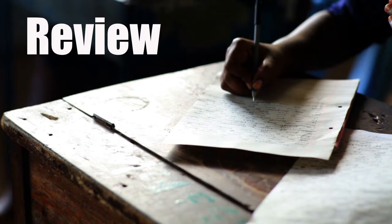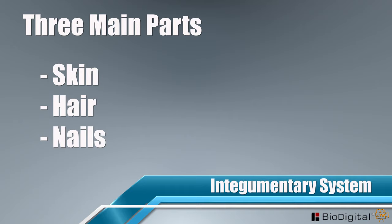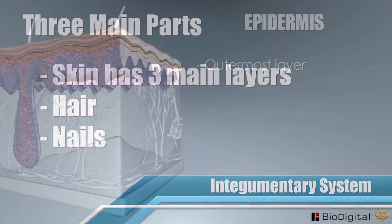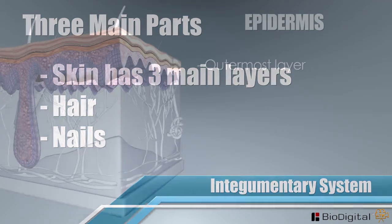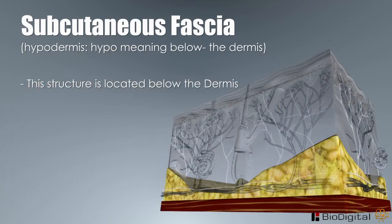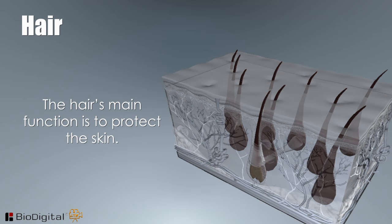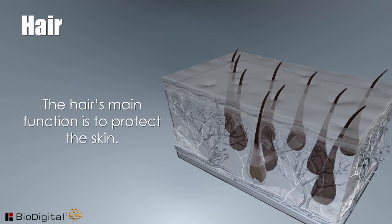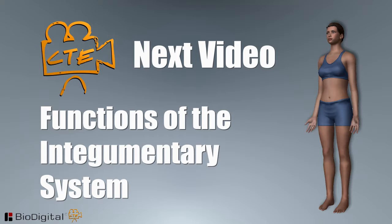Before we conclude part one of the integumentary system, let's review. There are three main parts to this body system: the skin, the hair, and the nails. The skin has three main layers — the epidermis, which is the outermost layer; the dermis, which contains major structures and functions within a framework of elastic connective tissue; and the subcutaneous fascia, or hypodermis, which is the innermost layer. Hair's main function is to protect the skin, and nails serve the fingers and toes as protective plates and enhance fingertip sensation. In our next video, we will be covering the functions of the integumentary system. Thanks for watching, and we'll see you again in part two.